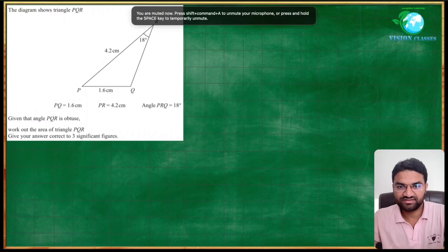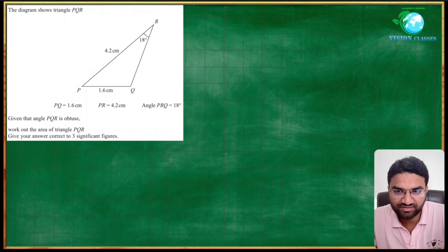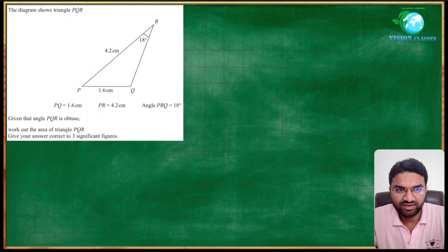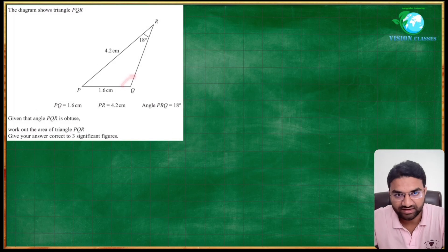Hi, welcome to Vision Classes, classes for IGCSE GCSE students. Today we have to discuss one of the interesting questions from the IGCSE past year paper, a question from 2023. Here we have a triangle PQR, and angle PQR is an obtuse angle, and we have to find the area of triangle PQR.